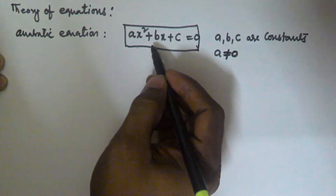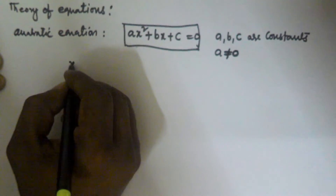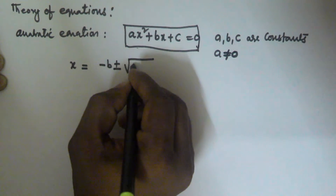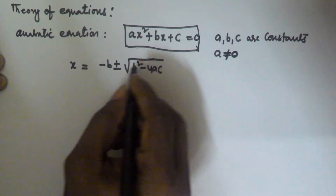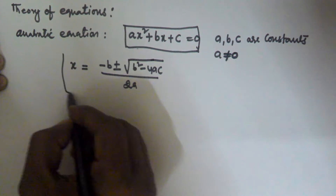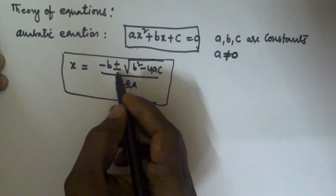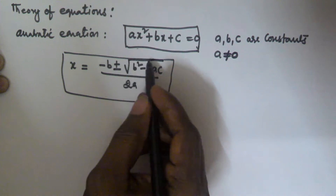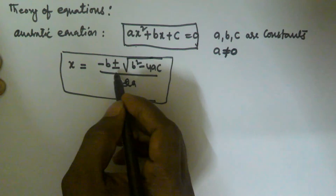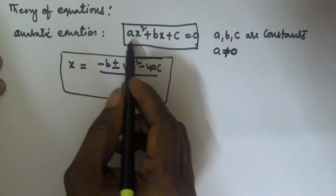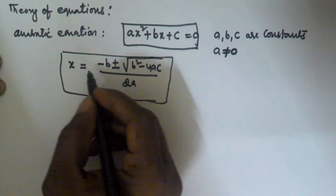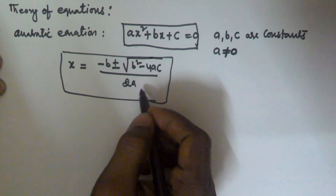The roots of a quadratic equation are given by: x = (−b ± √(b² − 4ac)) / 2a. We take plus one time and minus one time, giving us two values for x. So a quadratic equation always contains two roots.